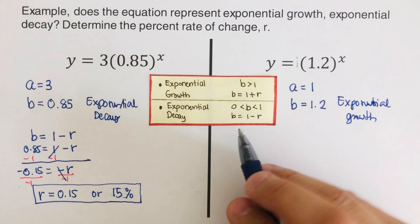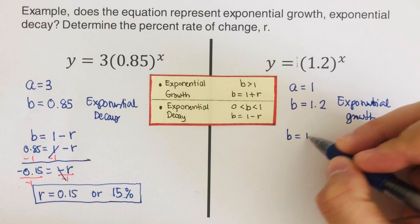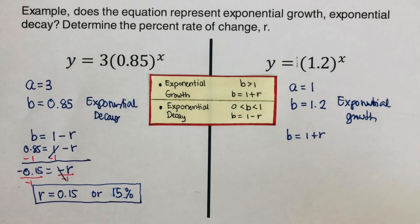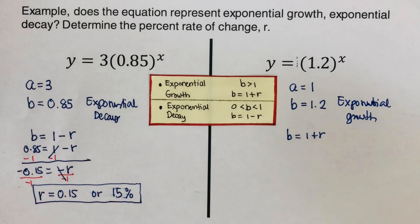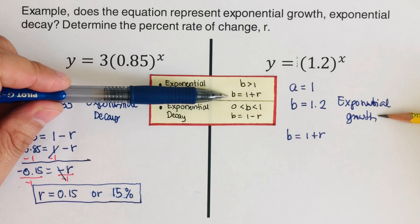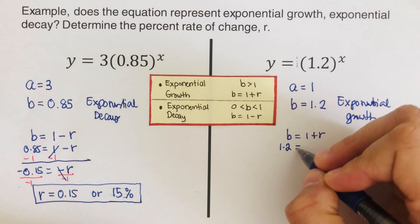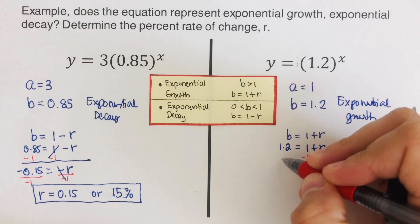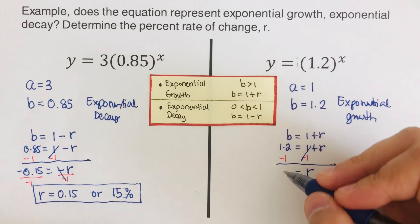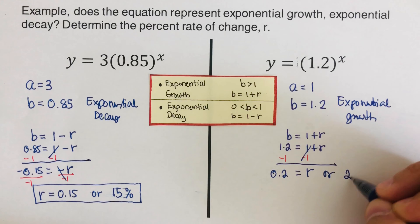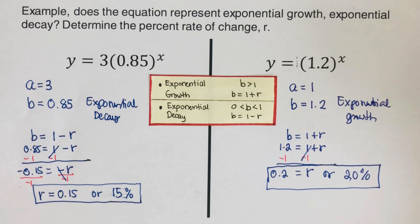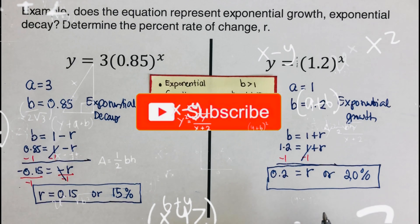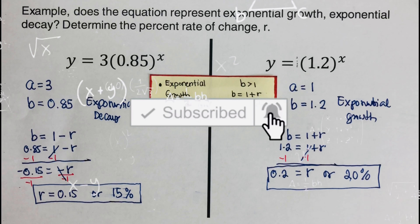To find the growth rate, we use b = 1 + r, because this is exponential growth — unlike the previous problem which was exponential decay and used b = 1 − r. So 1.2 = 1 + r. Subtracting 1 from both sides gives r = 0.2, or 20%. The growth rate is 20%. If you found this video helpful, hit like and subscribe for more math videos!